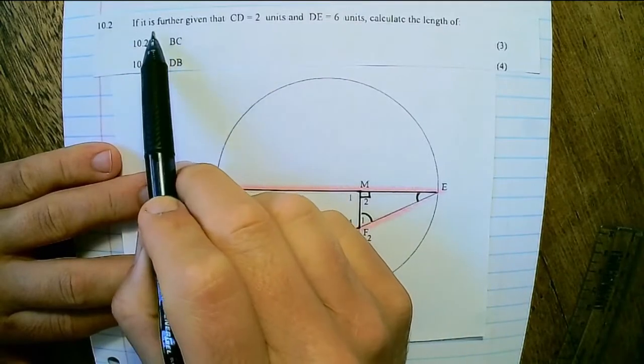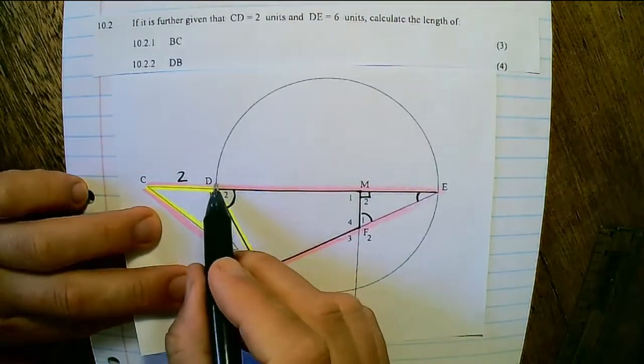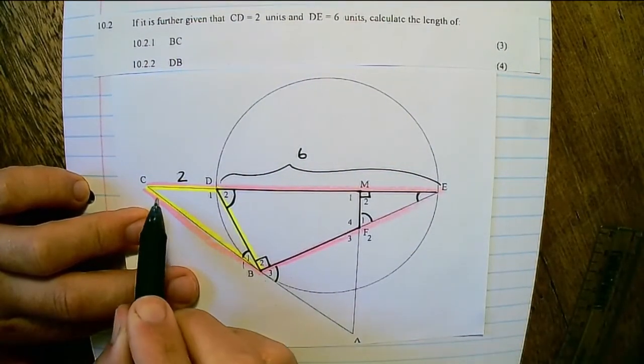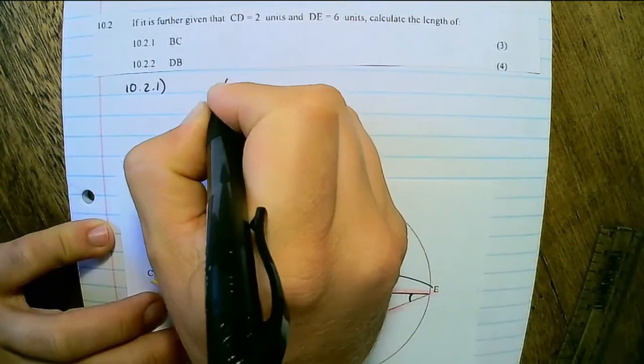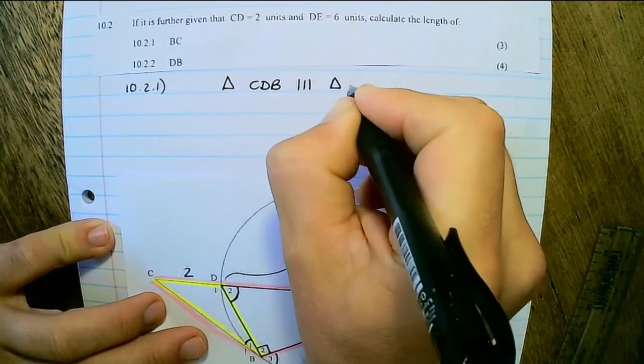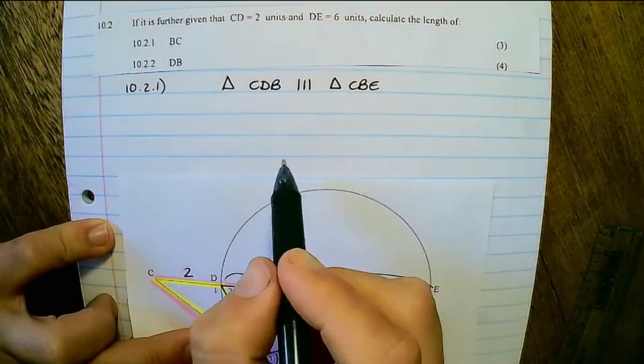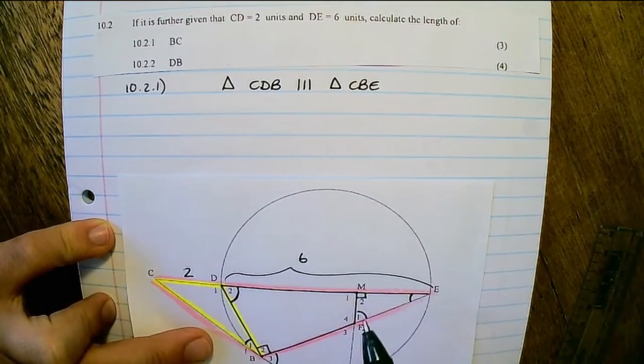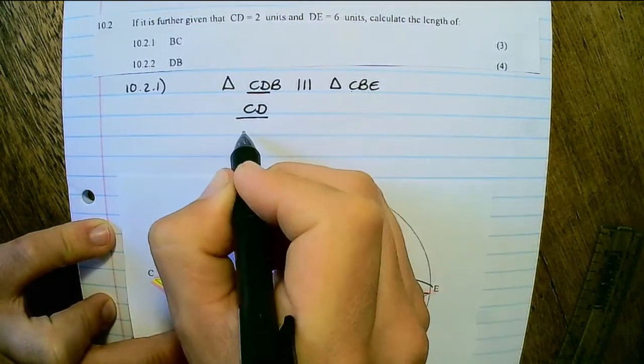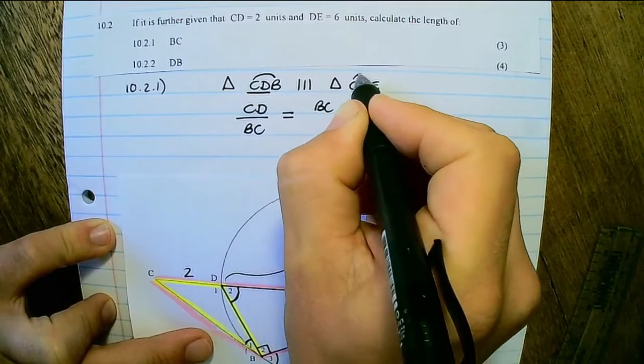10.2. It is further given that CD is 2 units and DE is 6 units. Calculate the length of BC. So in the previous question, we have proven that triangle CDB is similar to triangle CBE, and I want to find the length of BC. And I am given the length of DC and DE. So CD over BC would be equal to BC over CE.